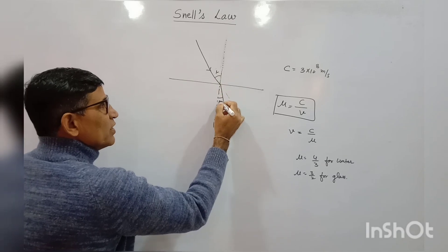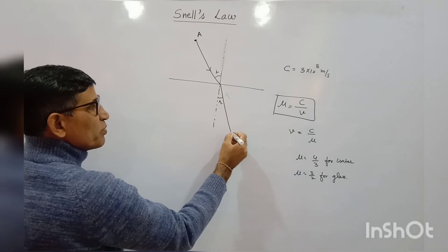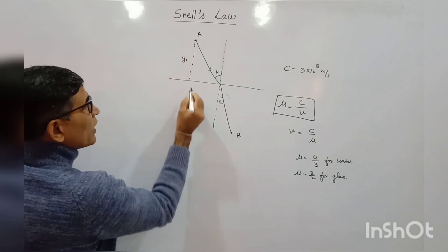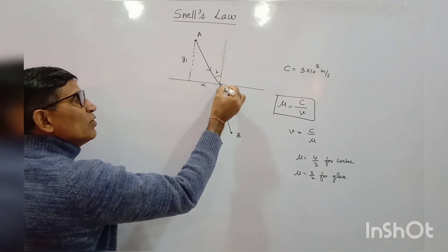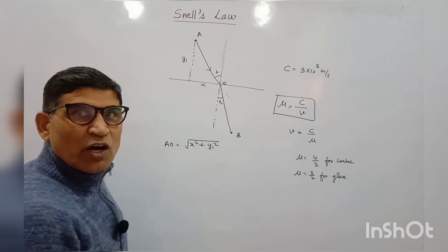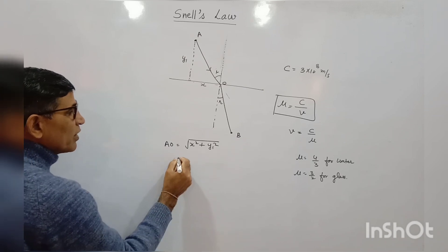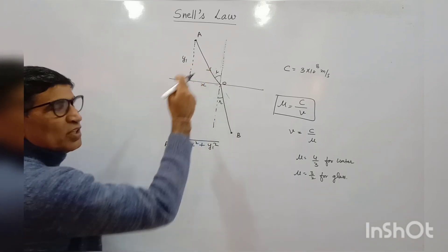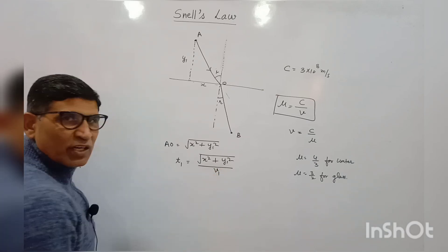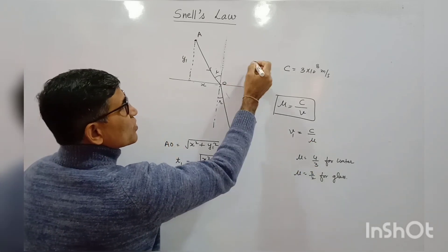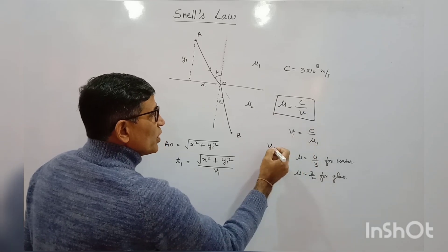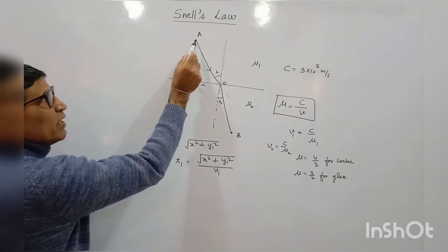Suppose the angle of incidence is I and the angle of refraction is R. The light starts from point A and reaches point B. Mark the distance as Y1 and horizontal distance as X, so AO = √(X² + Y1²). The refractive index of the first medium is μ1 and the second is μ2, so V1 = C/μ1 and V2 = C/μ2.